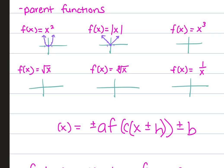x cubed, we pass through 0, 0, 1, 1, negative 1, negative 1, but we make it like a little bit of an s. Square root is 0, 0, then 1, 1, and then it flattens out.